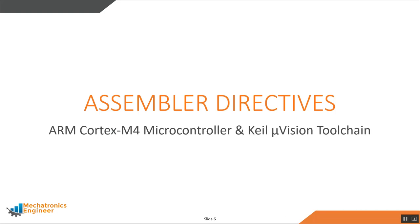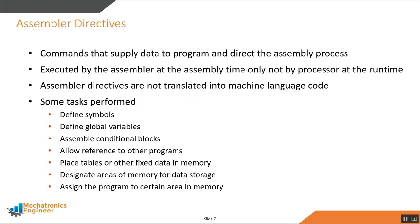The ARM assembler source file can contain assembler directives. Assembler directives are commands to the assembler that supply data to the program and direct the assembly process. They are executed by the assembler at assembly time, but not by the processor at runtime — no machine code is generated for them. Assembler directives can be used to define symbols and global variables, assemble conditional blocks of code, allow references to other programs, and designate areas of memory for data and program storage.